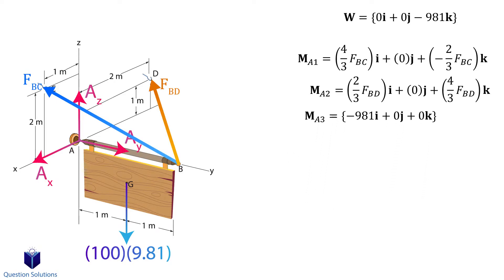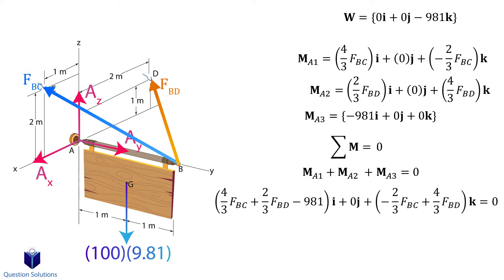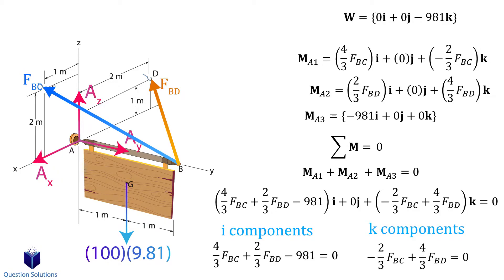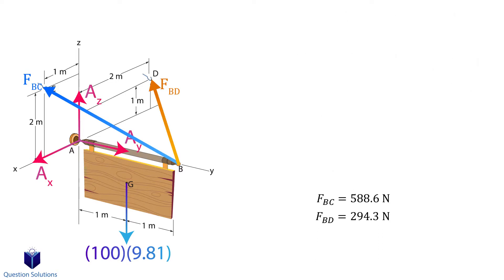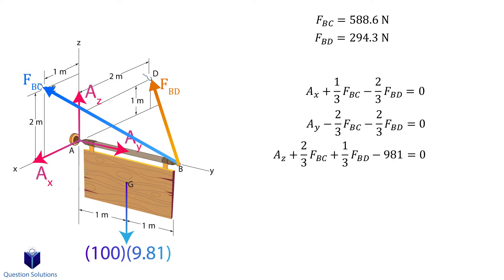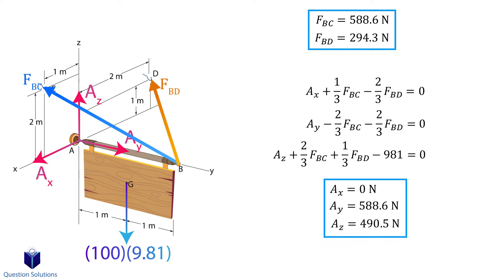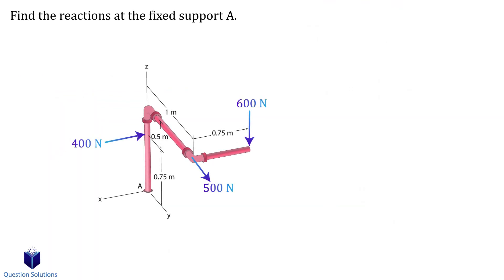For the object to stay still, all of the moments added together must equal zero. Since we wrote our moment equation about point A, the reactions at A won't create any moments. Using just the moment equation we can find F_BC and F_BD by equating the i and k components to zero — we don't have any j components. Solving the two equations gives us the forces in the two cables. Using those values, we can solve the other three equations for the unknown reactions at A.